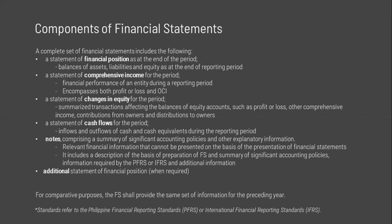IAS 1 does not prescribe the order or format of presenting items in the statement of financial position. The foregoing is simply a list of items that are sufficiently different in nature or function to warrant separate presentation. Accordingly, an entity may modify descriptions used and the sequence of their presentation to suit the nature of the entity and its transactions. Moreover, additional line items may be presented whenever relevant to the understanding of the entity's financial position.